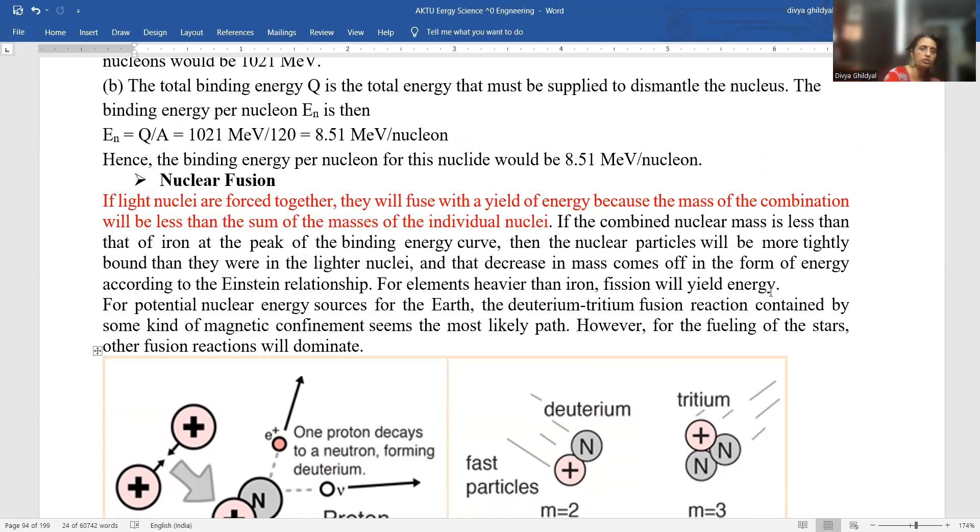Fusion comes from the word fuse, that means to combine any two things. If lighter nuclei are posed together, they will fuse and yield energy because the mass of combination will be less than the sum of masses of the individual nuclei.